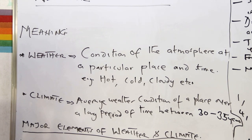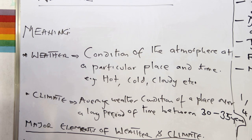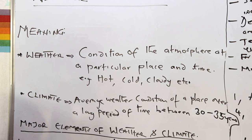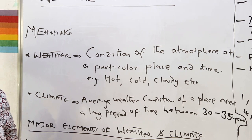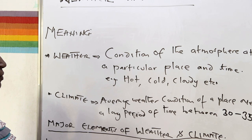So what do we mean by weather? The word weather means the condition of the atmosphere at a particular time and place. For example, hot, cold, cloudy, etc. So when we say it is hot or it is cold or cloudy, we are saying something about the condition of the atmosphere at a given time. And that is what weather is.